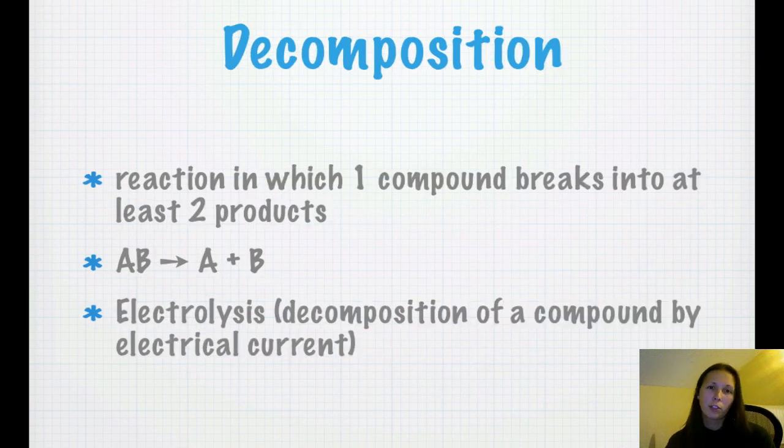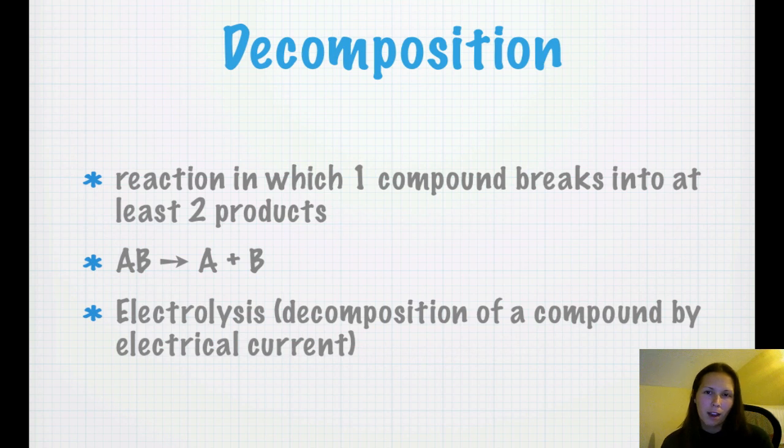Decomposition is where a reaction where one compound breaks down into at least two products. So, it'll be where you have AB and it breaks down into A and B. So, I've showed you this before, electrolysis, which I showed you electrolysis of water where we took H2O and broke it down into hydrogen gas and oxygen gas. It was where they had the little tower thing. If you guys want to go back and watch that.